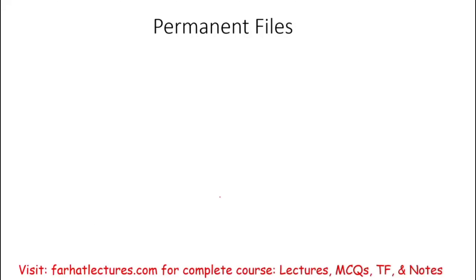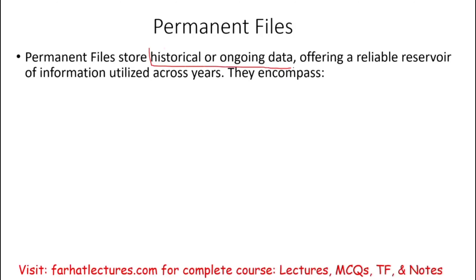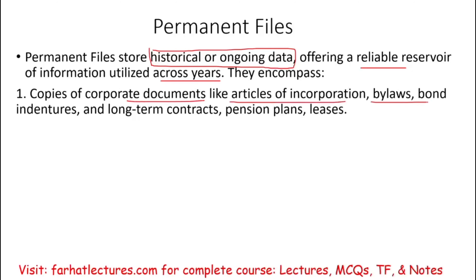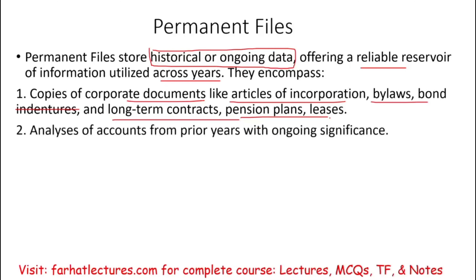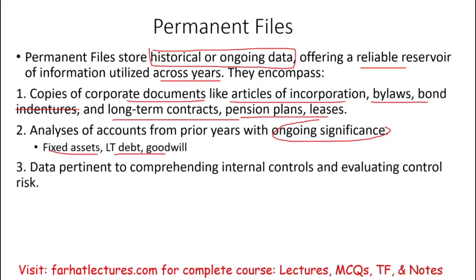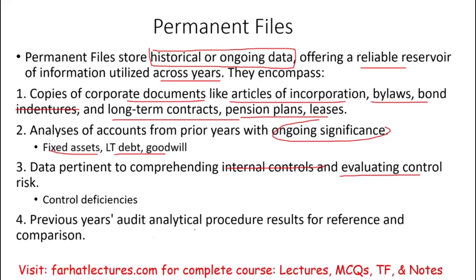Under audit documentation, we have permanent files and current files. Permanent files store historical or ongoing data that stays with you from year to year. The permanent file includes copies of corporate documents like articles of incorporation, bylaws, bond indentures, long-term contracts, pension plans, leases, and similar documents. It also includes analysis of accounts from prior years with ongoing significance — such as fixed assets, long-term debt, or goodwill — data relevant to understanding and evaluating internal control, any control deficiencies, and prior-year analytical procedures for reference and comparison.